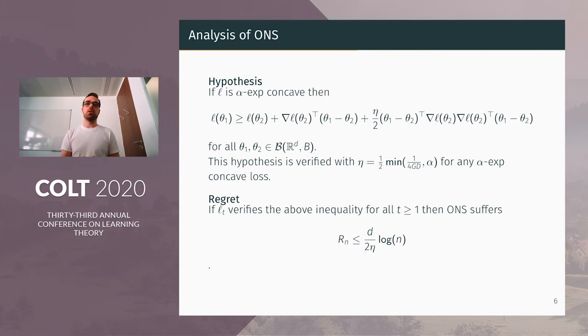Before defining our algorithm, I need to recall some key parts of the analysis of online Newton step. Online Newton step relies on quadratic approximation of the loss, and the main hypothesis that we need to show logarithmic regret is that this quadratic approximation is a lower bound of the true loss. For example, any α-exp-concave loss verifies this hypothesis if we take η accordingly.